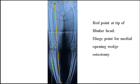Now we identify the hinge point or pivot point, located below the subchondral sclerosis of the lateral tibial plateau. It should be at least 1 cm below the lateral plateau, but preferably 18 mm in males and 15 mm in females. It approximately corresponds with the tip of the fibular head.